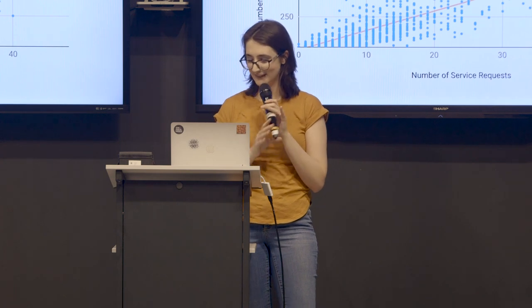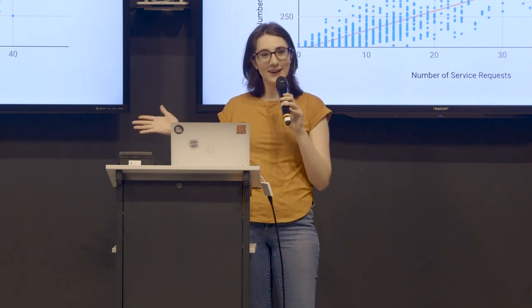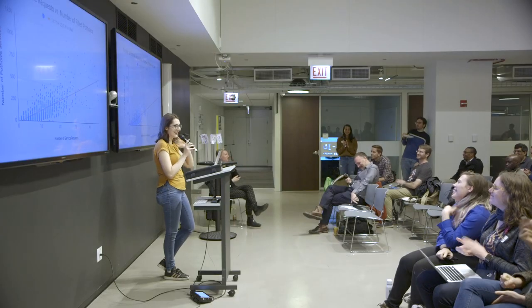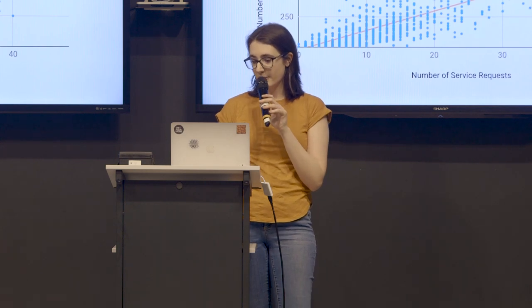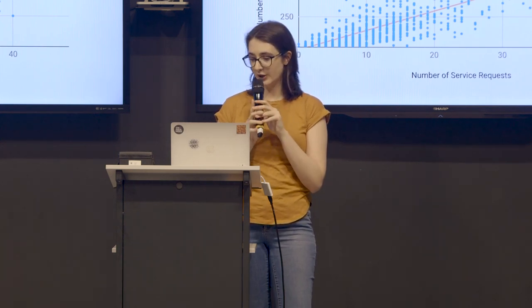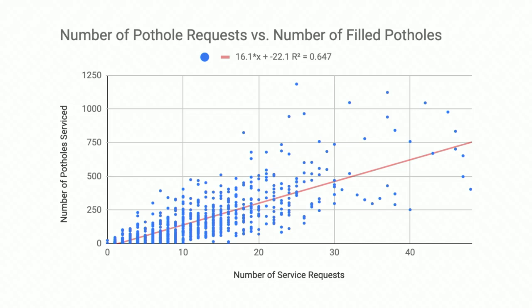I'm a little bit nervous — I'm not used to presenting, but this is a learning experience. Here we graphed the number of service requests for potholes versus the number of potholes that are actually filled. You'll notice that the number of potholes reported through service requests are much lower than the number actually serviced. This combined with only a moderate positive correlation between the two led us to use the data set of potholes that have actually been filled.